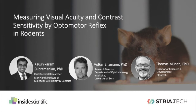First you will hear from Dr. Subramanian from the Max Planck Institute of Molecular Cell Biology and Genetics in Dresden. He will explain how chromatin architecture affects light scattering by photoreceptor nuclei, and how the chromatin architecture found in night-active animals provides a visual advantage under scotopic conditions.